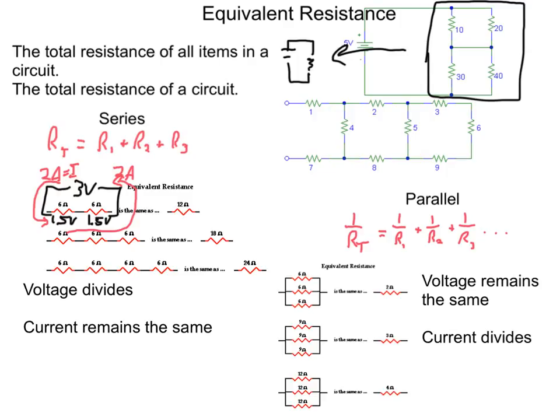Now in parallel, things work slightly different. In parallel, the voltage remains the same. So the voltage drop across these parallel resistors does not change, but the current does get to split up, which should make logical sense to you. So some current can go here, some current can go here, and some current can choose the top lane.